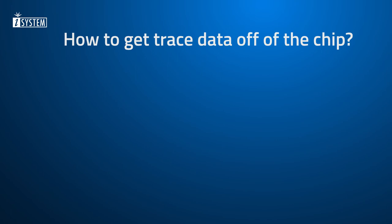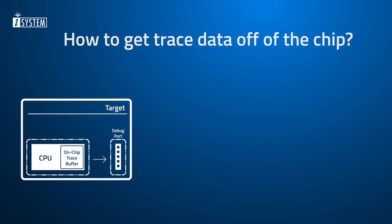So how do we actually get the trace data off of the chip? That depends on the hardware. In the first case, the microcontroller buffers the trace messages in a dedicated trace buffer on the chip, usually called OCTB, or on-chip trace buffer. The trace messages are temporarily stored in this buffer, and the debugger reads out this data through the debug interface.